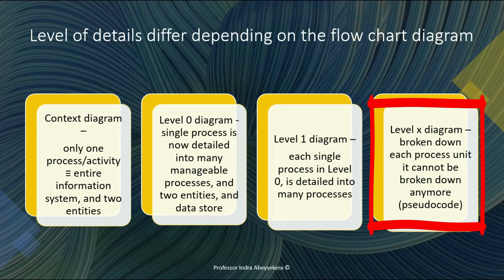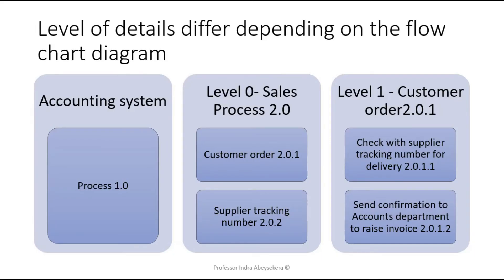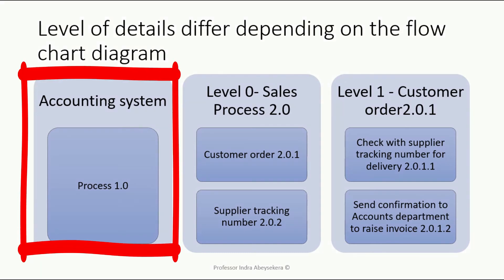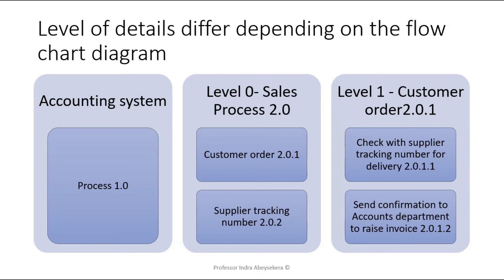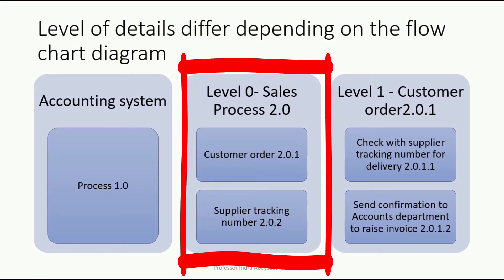That final state is called the pseudo code. As an example of levels of detail: if we take an accounting system as the context level diagram, the process or accounting system is given the number 1.0. Within that accounting system there are a number of processes, and the process we are now looking at is a single process — the sales process — which represents the level zero details.